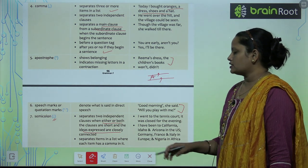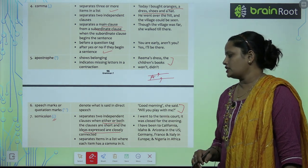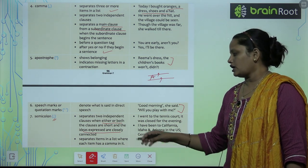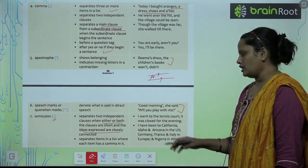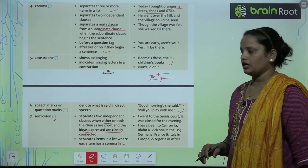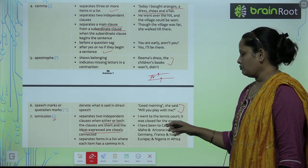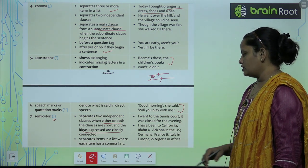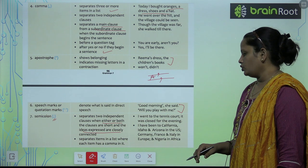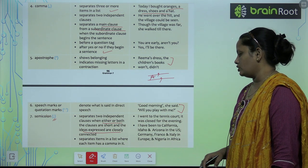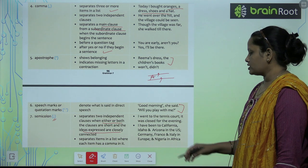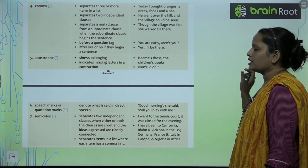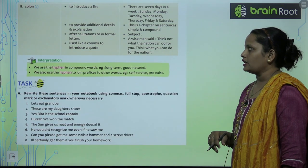Semicolon also separates items in a list where each item has a comma in it. Toh ye kya karta hai, items ko list se alag karta hai jahan pe har ek item mein ek comma hota hai. Example: 'I have been to California, Idaho and Arizona in the US; Germany, France and Italy in Europe; Nigeria and Africa.' — in sab jagahon par semicolon ko use kiya gaya hai.